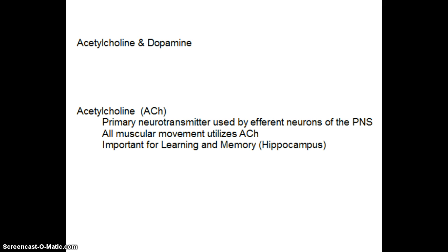Acetylcholine, or ACH for short, is the primary neurotransmitter used by efferent neurons of the peripheral nervous system — that simply means neurons going out of the central nervous system out to the body. In this case we're talking about motor neurons. So if you talk about the neuromuscular junction, where neurons innervate the muscles, all this muscular movement is going to utilize ACH, or acetylcholine.